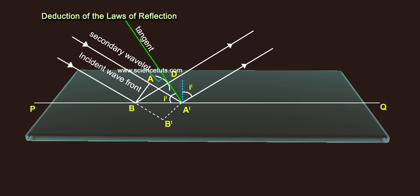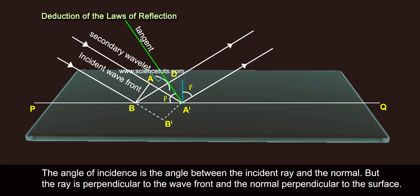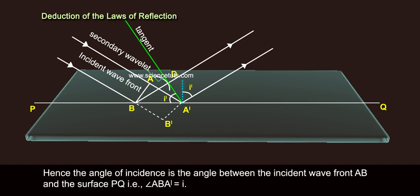Deduction of the Laws of Reflection. The angle of incidence is the angle between the incident ray and the normal, but the ray is perpendicular to the wave front and the normal perpendicular to the surface. Hence, the angle of incidence is the angle between the incident wave front AB and the surface PQ, that is angle ABA' equals to I.